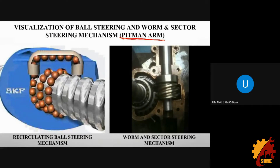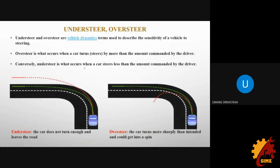The Pitman arm is a specific sort of mechanism used to turn the wheels. Moving on to a very important topic: understeer and oversteer. Understeer is when you turn the steering wheel but the car doesn't turn enough and continues going straight ahead — as you can see here, the intended path to follow is a curve, but due to understeer the car moves straight. In oversteer, when you turn the wheel, the car turns more than intended.